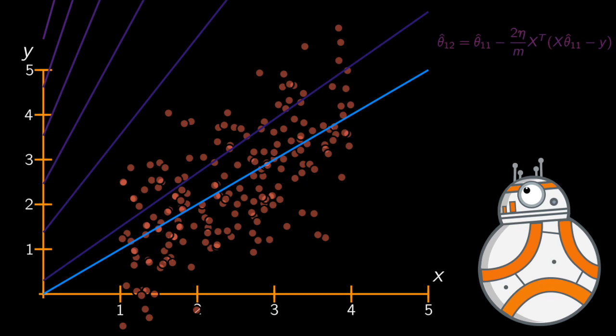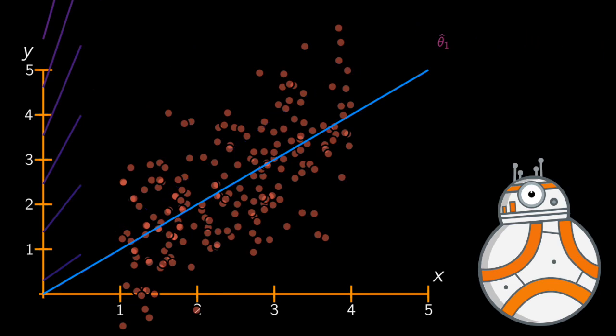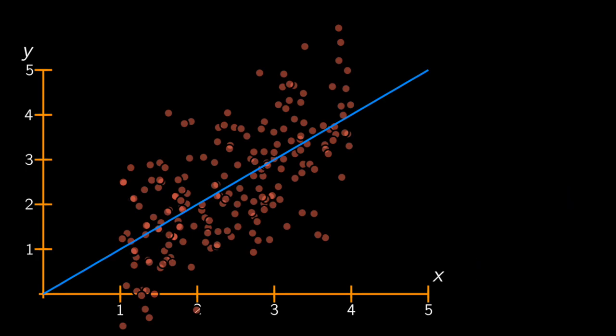So the learning rate is a really sensible parameter that needs to be adjusted with care. Perfect. Now you know two ways of performing linear regression: one using the normal equations that involves matrix inversion, and the other using gradient descent.